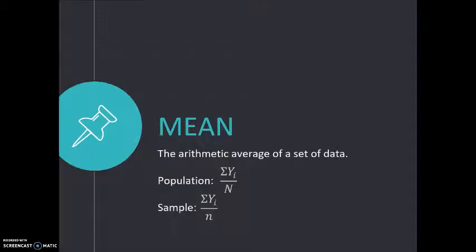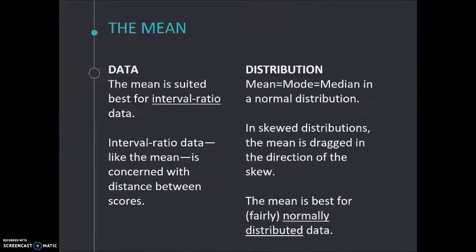So if I had the numbers 4, 5, 5, and 6, n would be 4 because I have 4 scores. Sigma Y or Sigma X would be 20 because 4 plus 5 plus 5 plus 6 is 20. So then Sigma Yi, 20, divided by 4, n would be 5. So my mean would be 5 for that set of data.